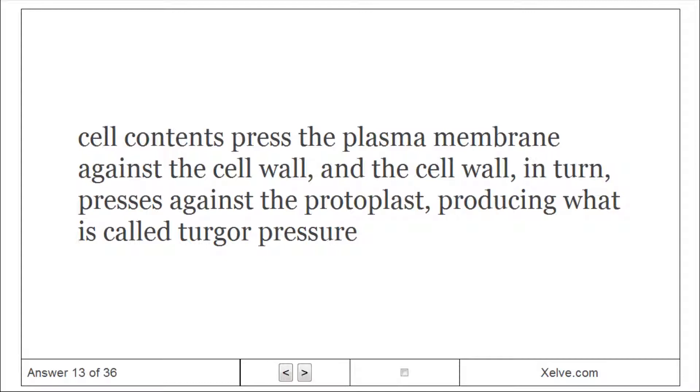Turgor pressure: Cell contents press the plasma membrane against the cell wall and the cell wall in turn presses against the protoplast, producing what is called turgor pressure.